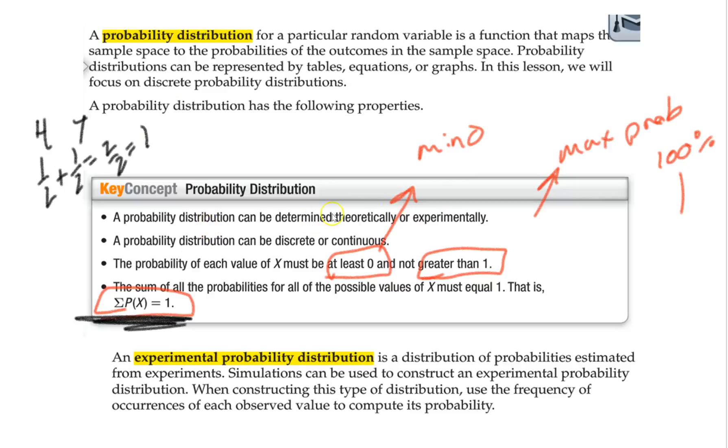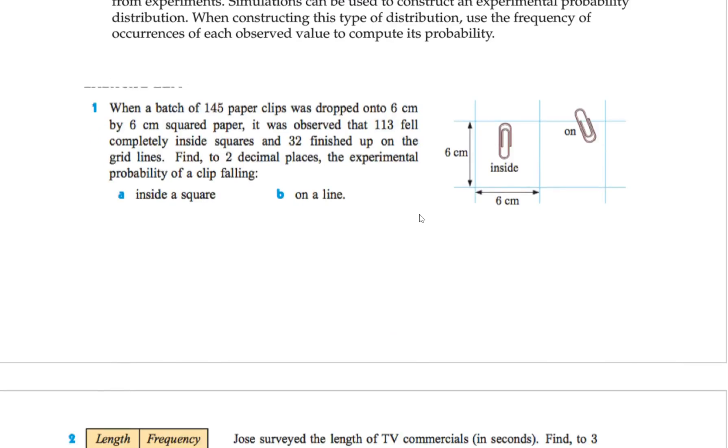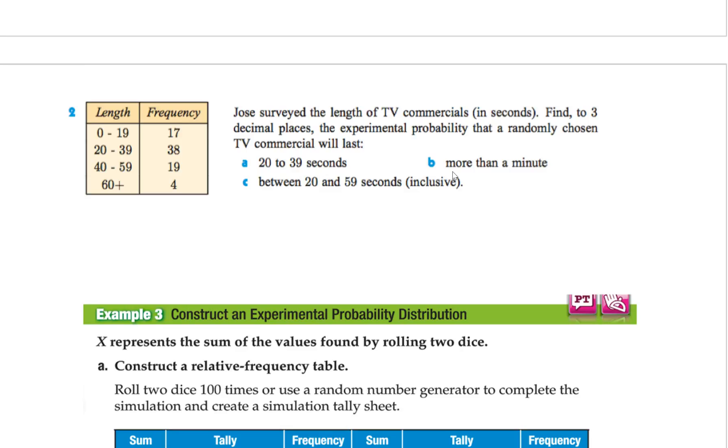The last thing is something we talked about before. There's two types of probabilities: the theoretical, that's based on the mathematics, and the experimental, that's based on the experiment. If you do an experiment, you take the findings. So like real quickly right here, let's do an experimental one. What happened here is they dropped a batch of paper clips onto a piece of paper. Some of them fell inside the paper, some fell on the paper. Based on this, there's 145 paper clips in total. So my total was 145. And then they said 113 fell completely inside. And only 32 fell on the line.